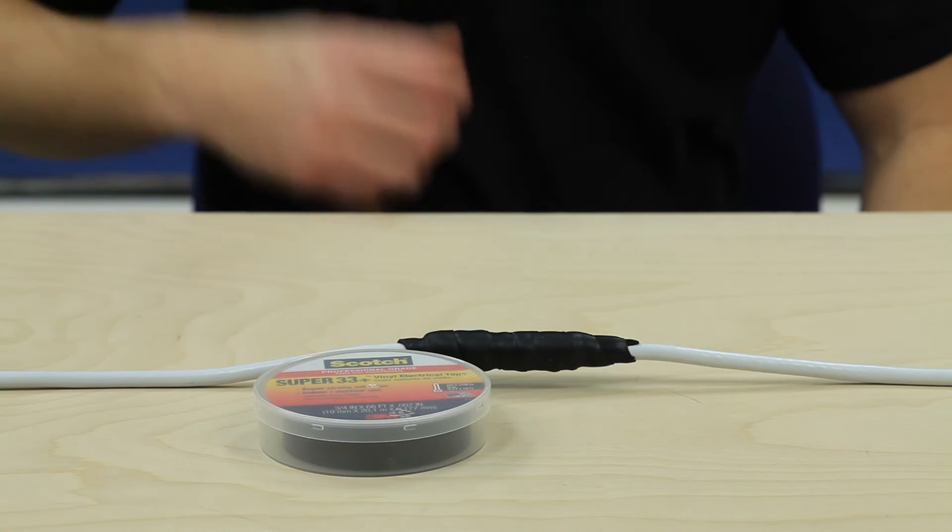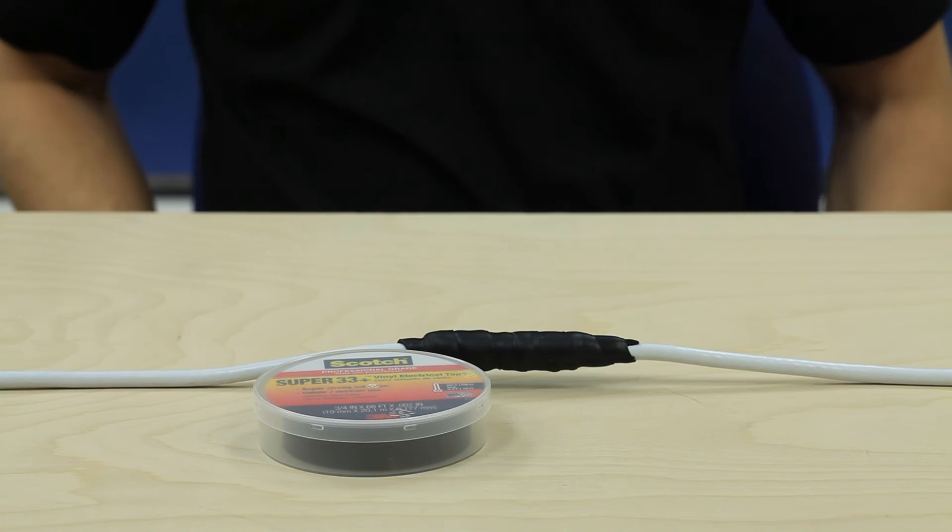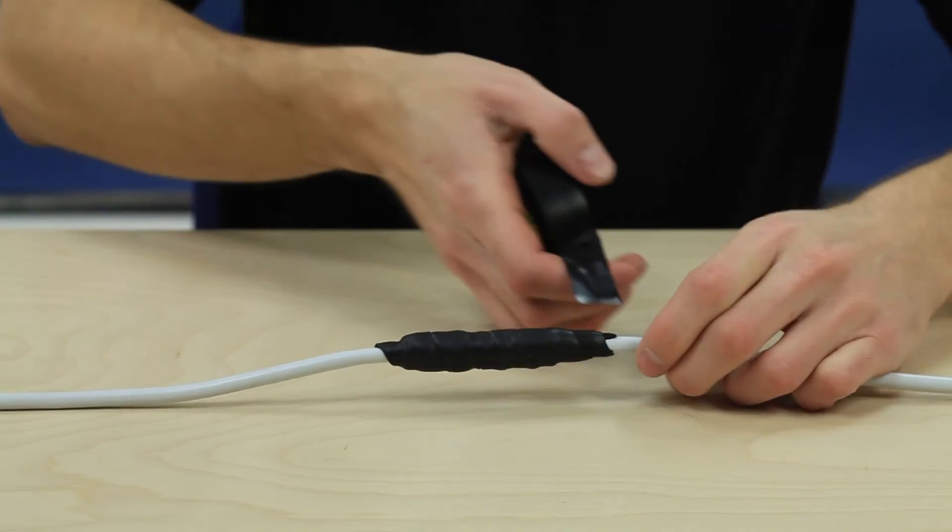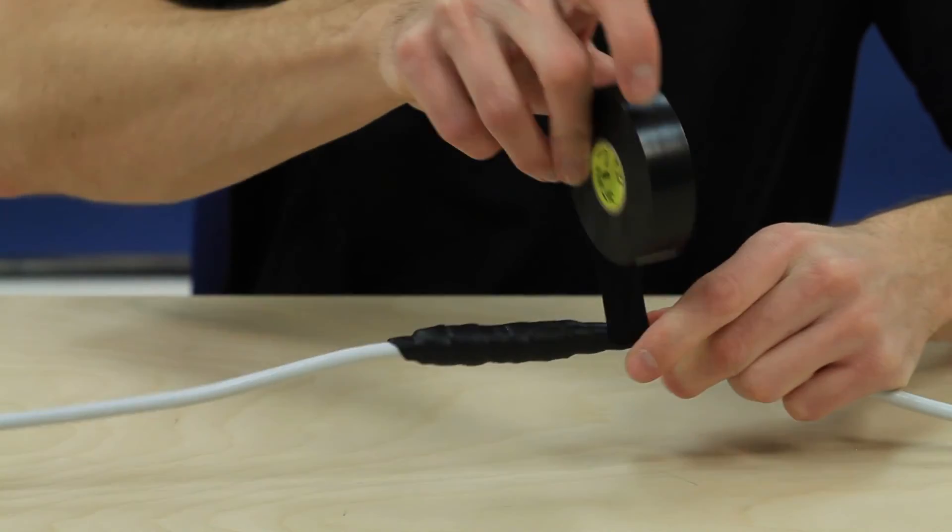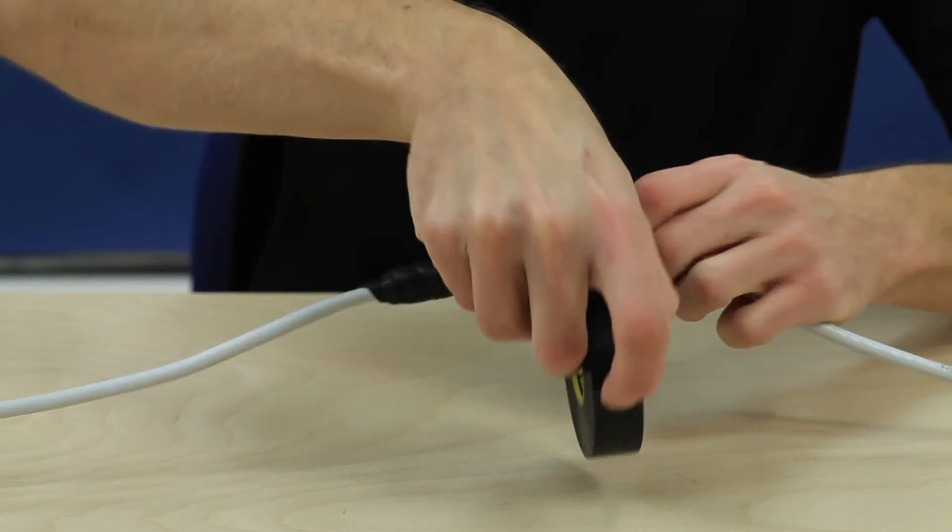Next, you want to cover the moisture sealing tape with electrical tape to provide UV protection. Start below the moisture sealing tape and overwrap the cable in the same manner as before, making sure to overlap the electrical tape by about half as you move up.